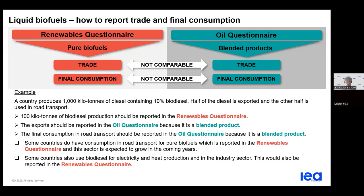In the renewable balance, you report the production of biodiesel, and then in the transformation sector this amount is reported under the flow for blending with diesel and other oil products. In this way, pure liquid biofuels are transferred to blended products. This concept also applies to biogases when biogases are blended with natural gas. This is very important to understand, as it is one of the peculiarities of the renewables questionnaire.